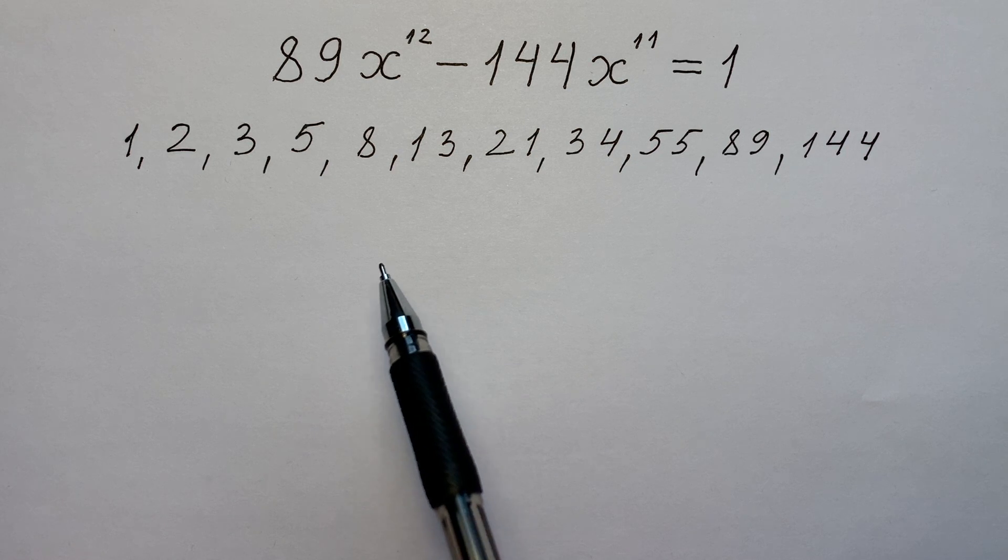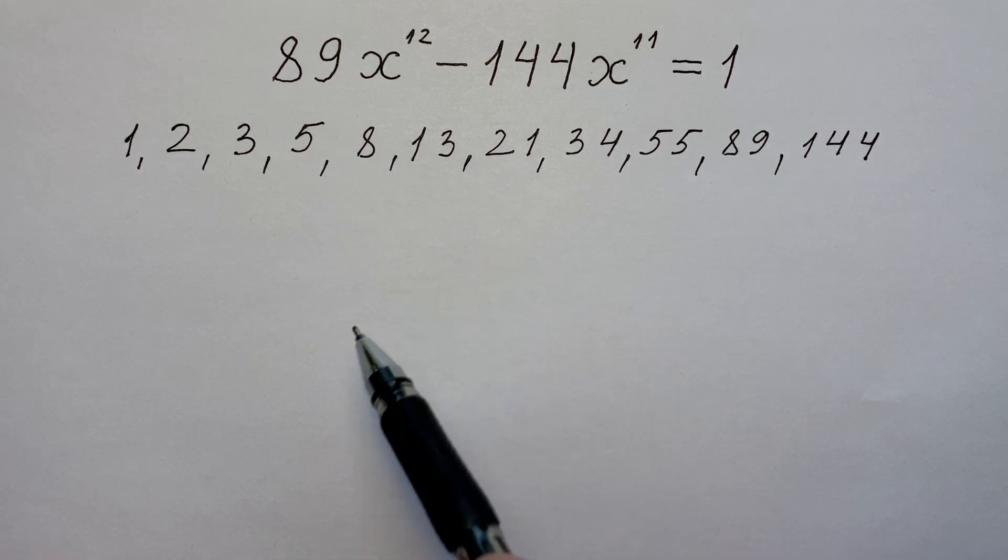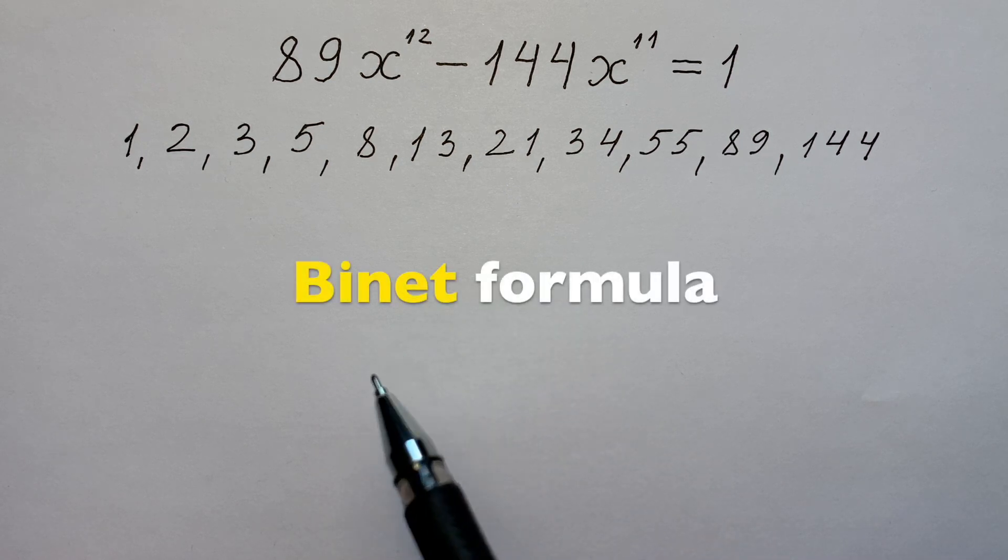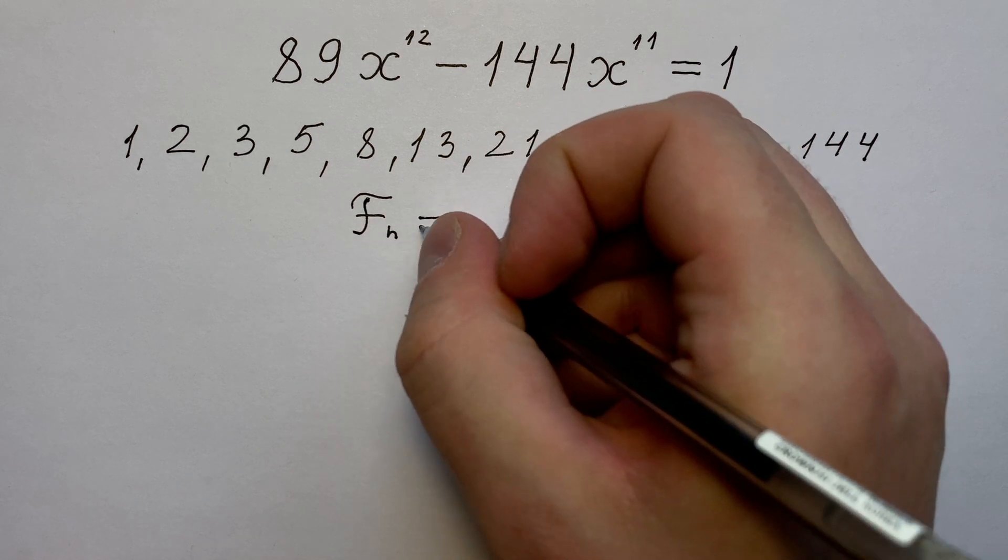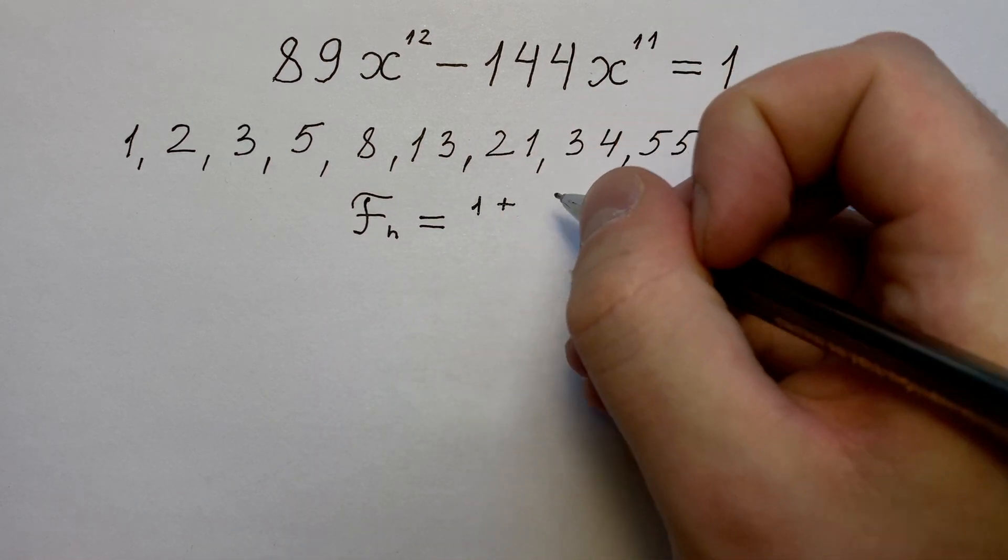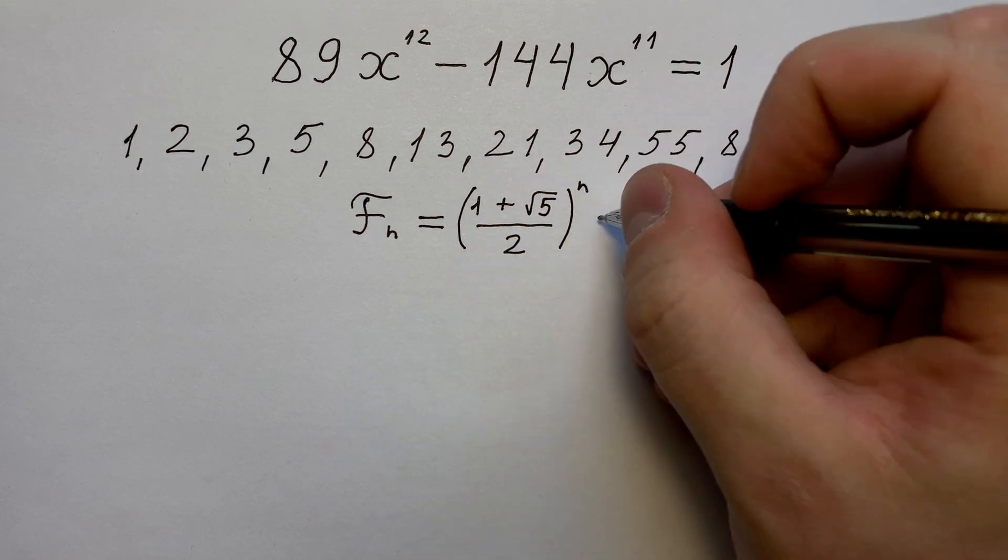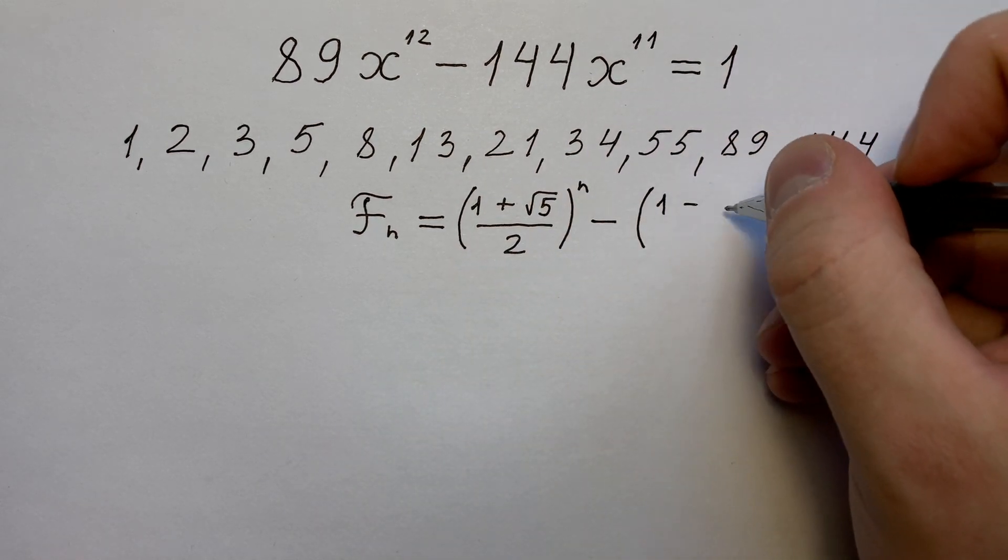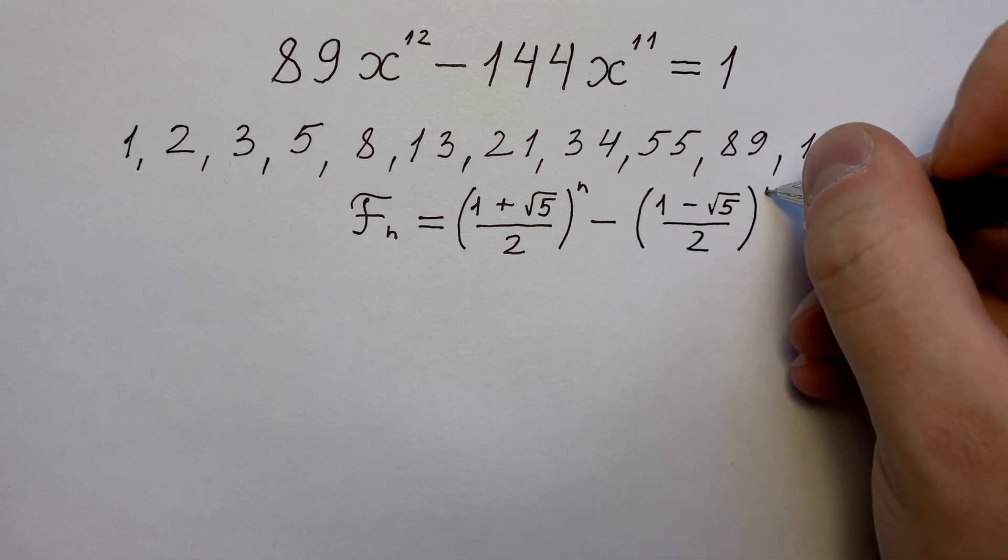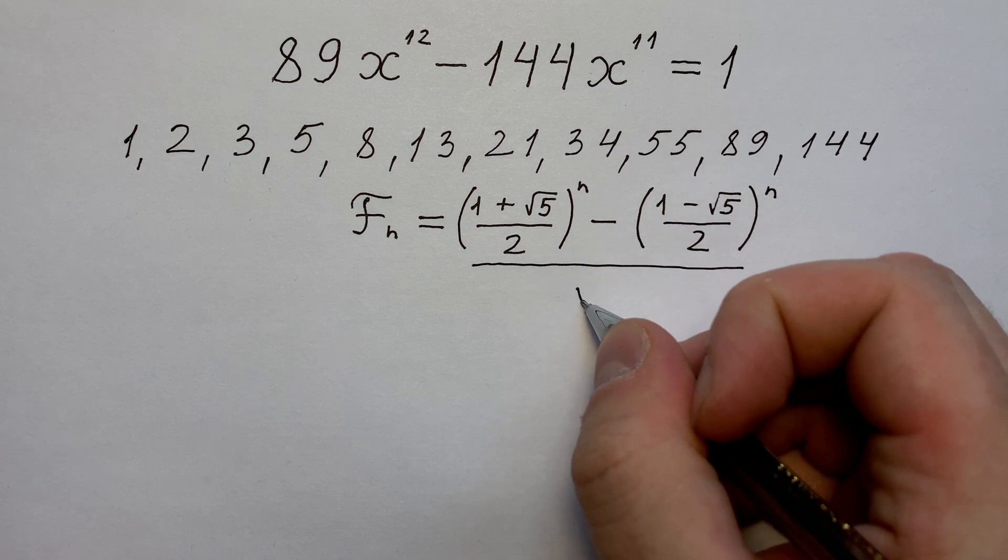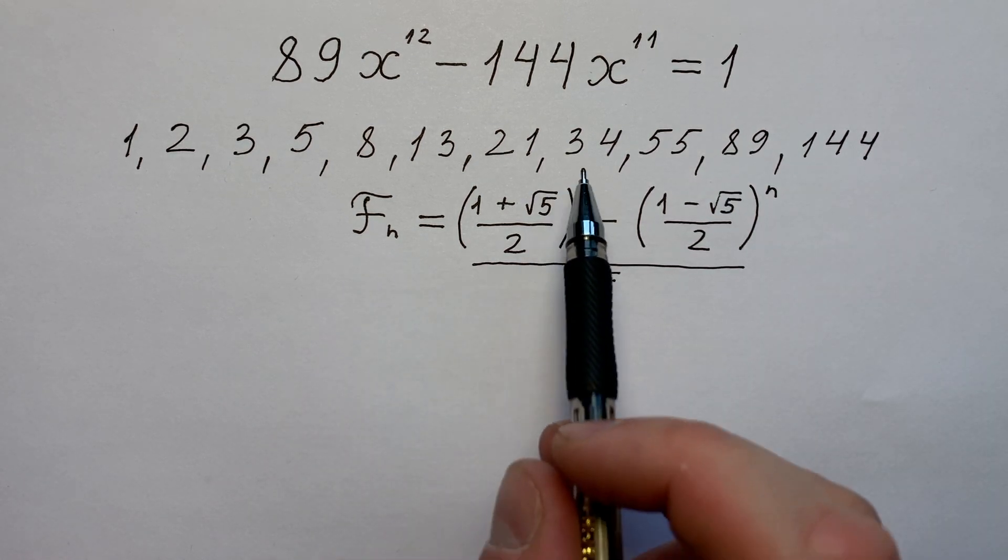By the way, what do we know about Fibonacci numbers? We know that every Fibonacci number can be written using the Binet formula. It looks like Fn equals (1 plus square root 5) divided by 2 to the power of n, minus (1 minus square root 5) divided by 2 to the power of n, all divided by square root 5. Fn is the nth Fibonacci number.